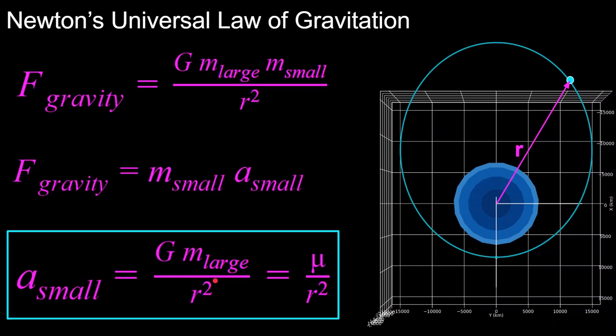And since for each large body, their mass is constant, say the Earth's mass is relatively constant, and the gravitational constant is constant in our universe, so their product is also constant. So we use that new constant called mu, and every body in the solar system has their own mu value. So in this equation, it gets even simpler to say that the acceleration of the small body is equal to mu divided by the distance between them squared.